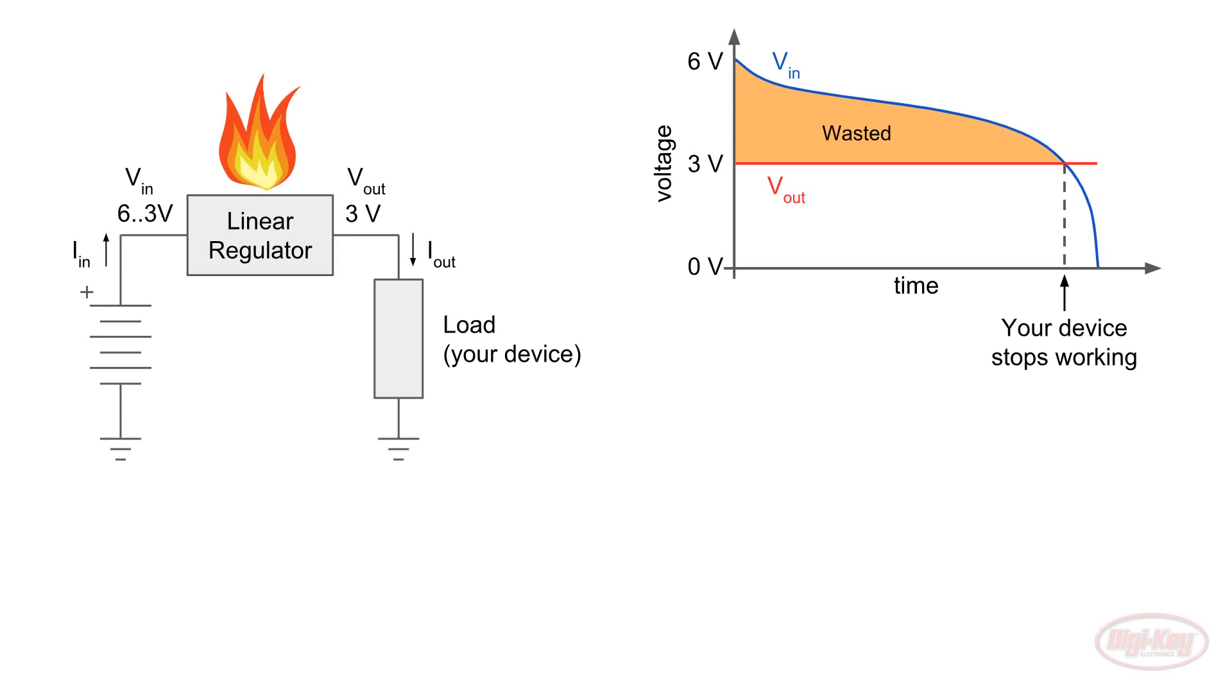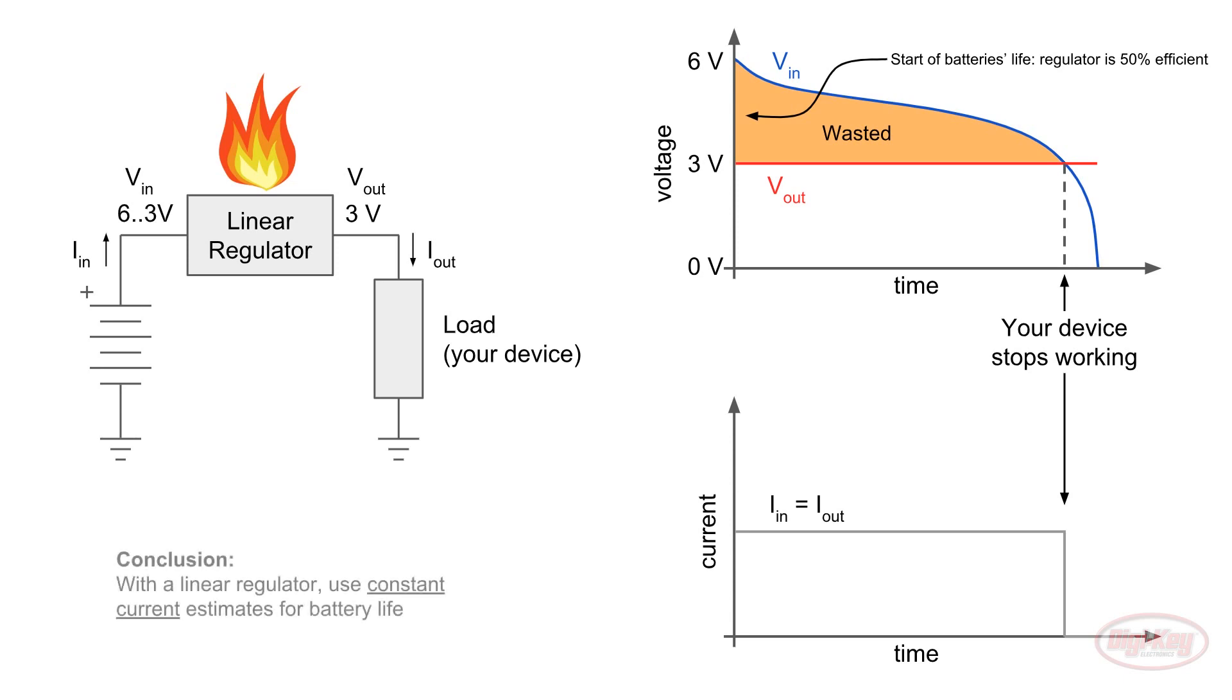If the input is 6 volts and the output is 3 volts, the regulator is 50% efficient. And, because linear regulators act like resistors, the input current is the same as the output current. Assuming our device draws a constant current, the input and output current will be steady, at least until the batteries drop below their cutoff voltage. So, if we're using a linear regulator to provide a steady voltage to our device, it's best to use the constant current calculations.